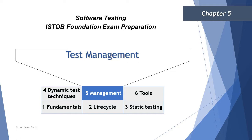Chapter 5 will have 9 questions out of 40. Together, chapters 4 and 5 make up 20 questions out of 40, making them critical chapters. Make sure you pay attention to all the important concepts in this chapter, as it will be very helpful in getting a passing score.